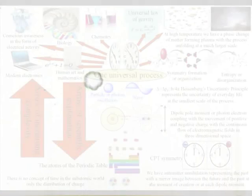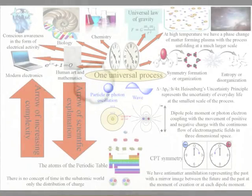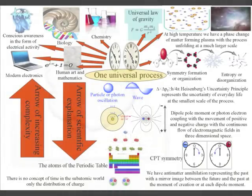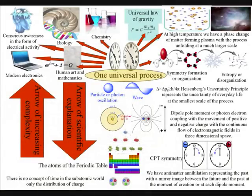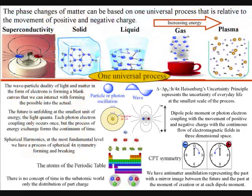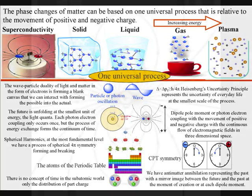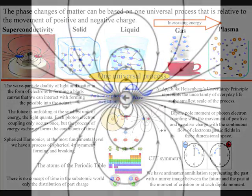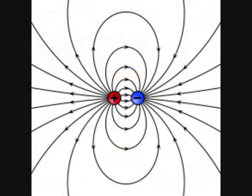Heisenberg's Uncertainty Principle represents the uncertainty of everyday life at the smallest scale of the process. In these videos I say that we have a geometrical process that is relative to the atoms of the periodic table. But at high temperatures we have a phase change in matter with the same geometrical process unfolding over a much larger scale, with charge being able to cover a large area of interstellar space.